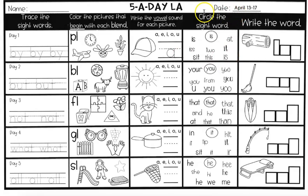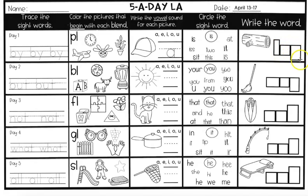The next box says circle the sight word. The one it wants you to circle is already circled — that is I-S, the word 'is.' Find all of the 'is' words in the box and circle them. The last box for this week, you're going to write the word using the box shapes to help you know if it's a tall letter, a letter on the dotted line, or one that hangs in the basement. That picture is a log — spell that word.